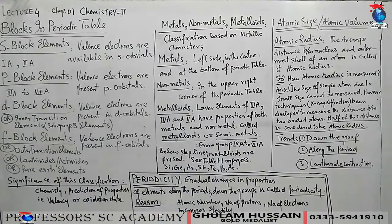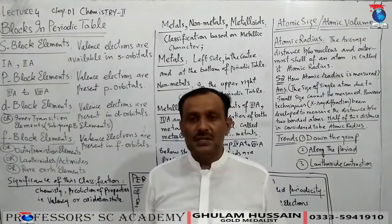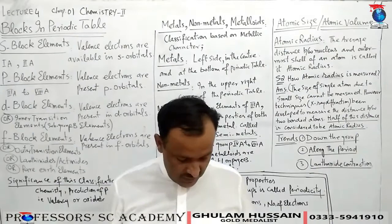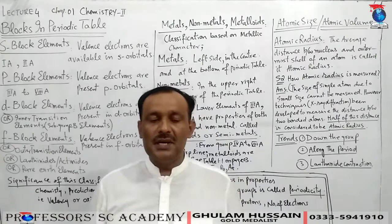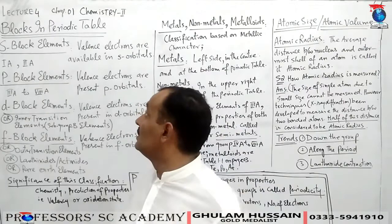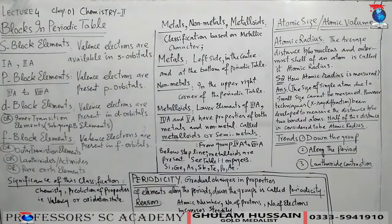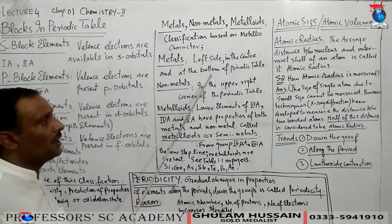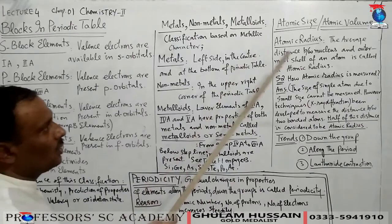Dear students of second year, we are discussing features of the modern periodic table. We have already discussed two features — groups, periods, and some families in the periodic table in lecture three. Now in lecture four, we will discuss blocks in the periodic table, metals, non-metals and metalloids, and also periodicity and atomic sizes.